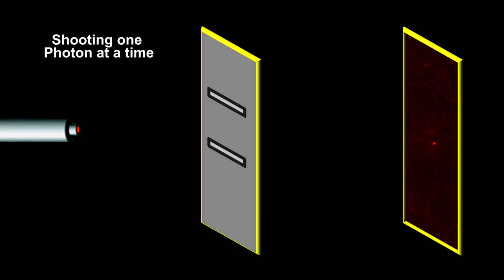We've seen Young's diffraction pattern that told us light was a wave. So now let's fire photon particles, one at a time, at the slits.